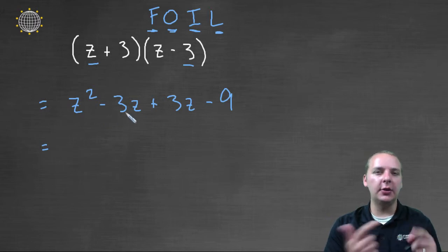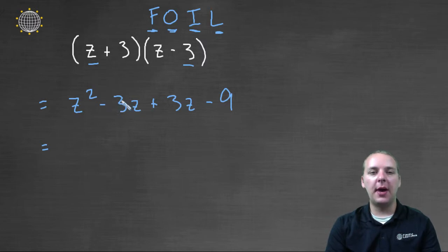We take a quick look at our answer, we see if there's any like terms that can be combined or anything like that. I do see a couple. Here we have a minus three z and a plus three z, and actually they'll cancel for this example, because one's a positive and one's a negative. So actually our final answer would be z squared minus nine.